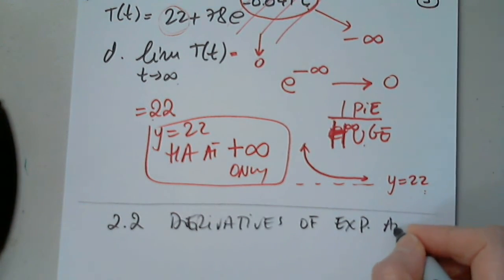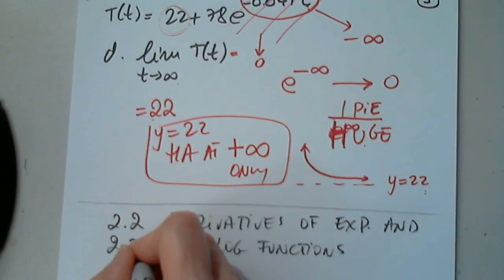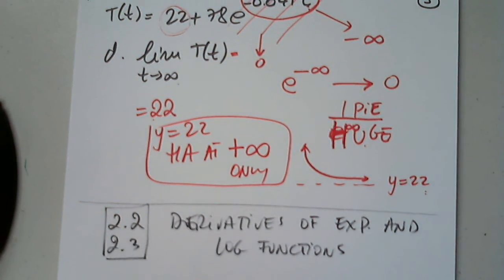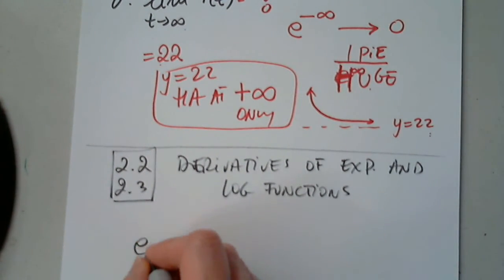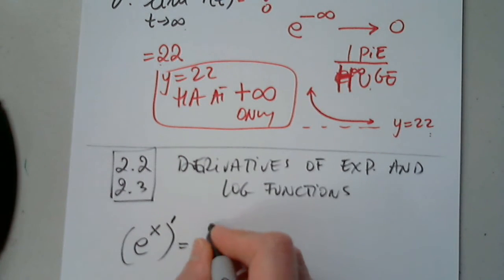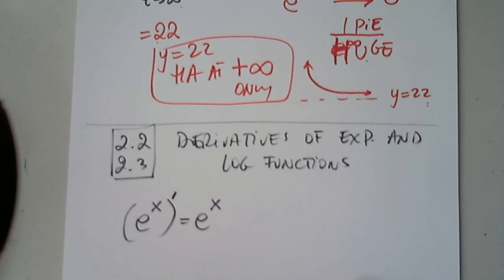Of exponential and log functions. So 2.2 and 2.3, and this is the end of chapter 2. So when we look at the exponential function, this is the nicest derivative ever. This is it. The function is its own derivative. Very nice.